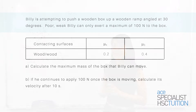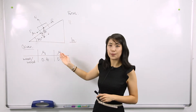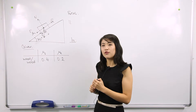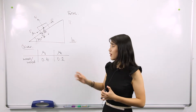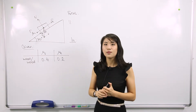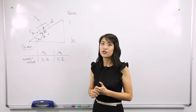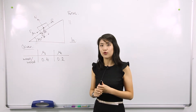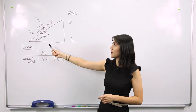In this question, we have a wooden box being moved up a wooden slope. We were given the coefficients of static and kinetic friction in the question, and I've transcribed these down here. The first thing we should do in this question, and for every other kinematics question, is to draw a free body diagram showing all of the forces acting on our object. This free body diagram is shown here.